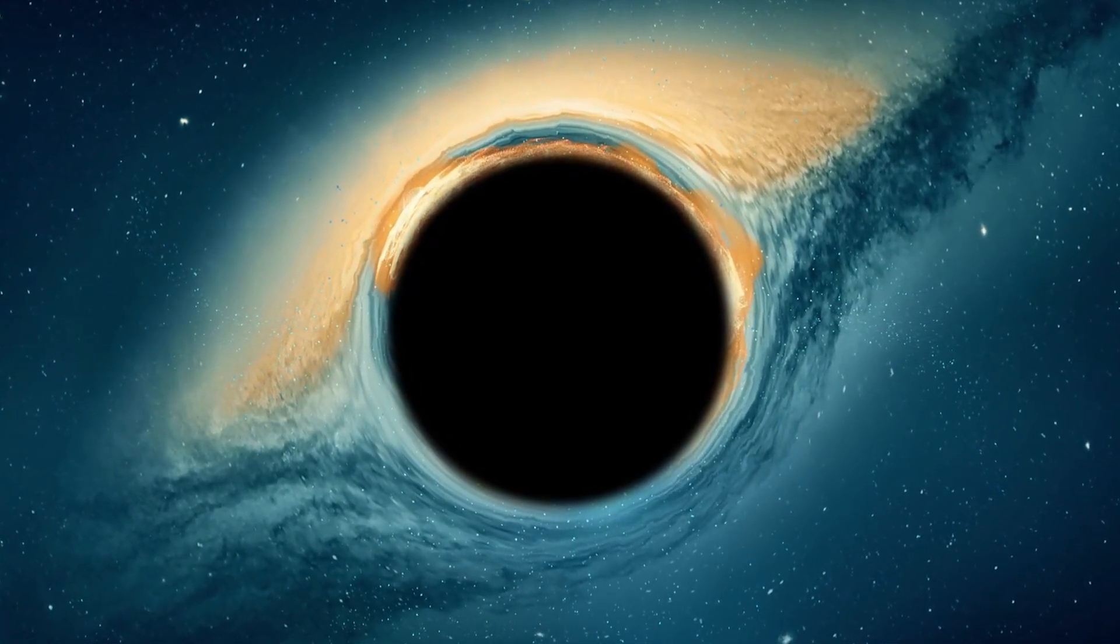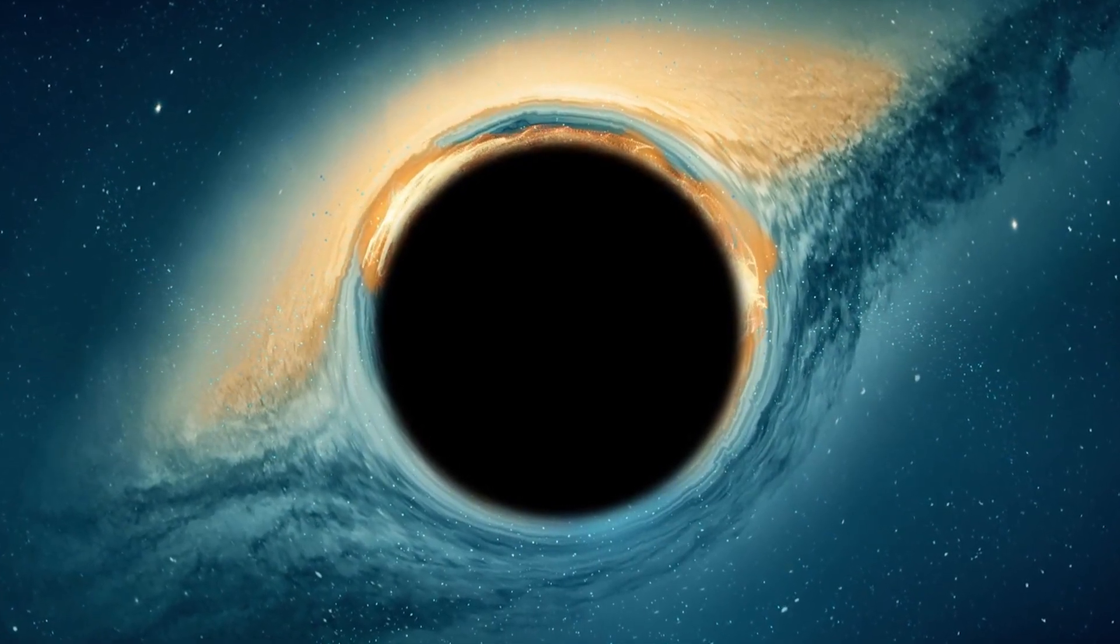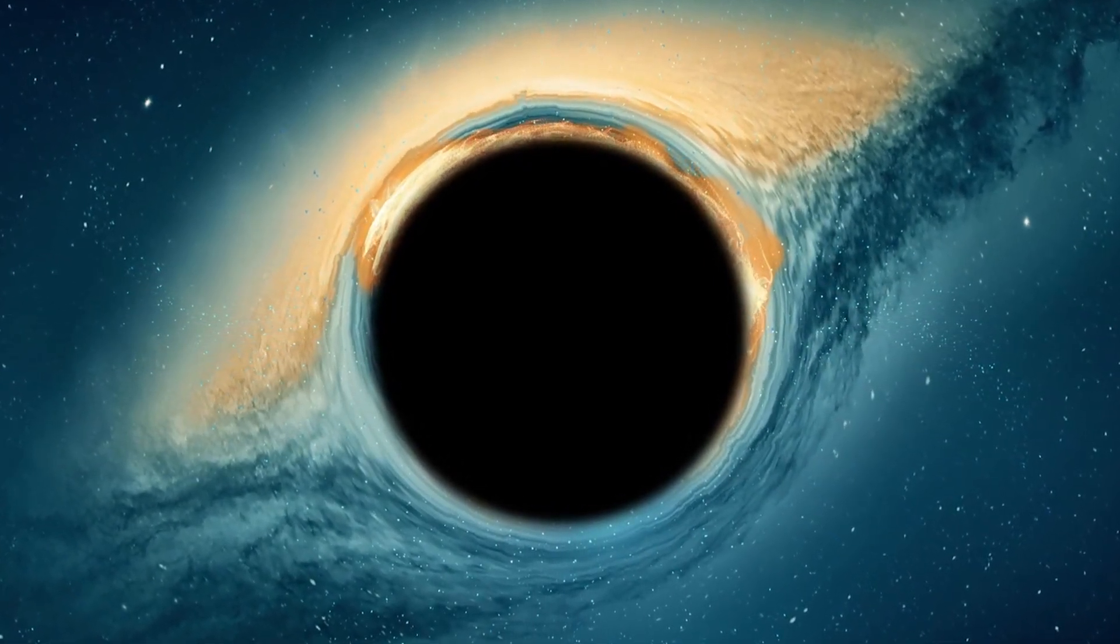This material heats up as it spirals towards the black hole, emitting X-rays and other types of radiation, creating a luminous ring known as a corona.